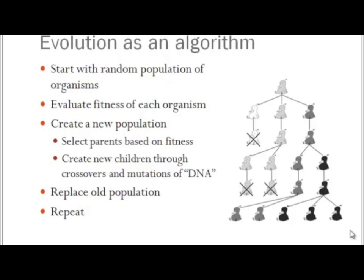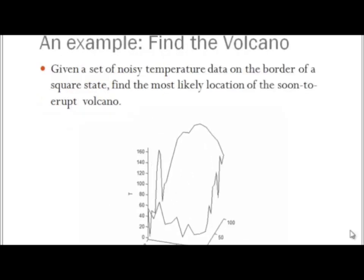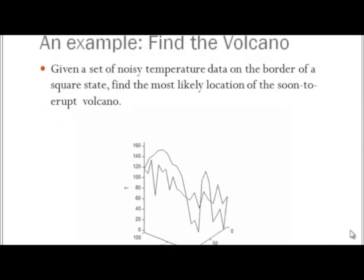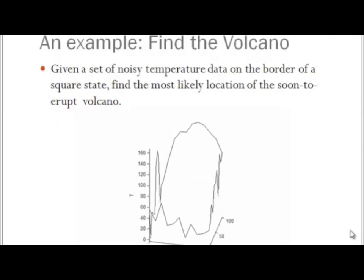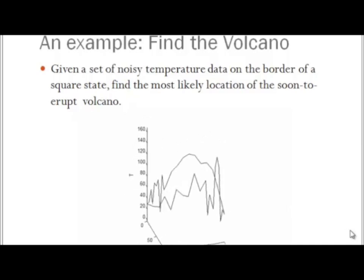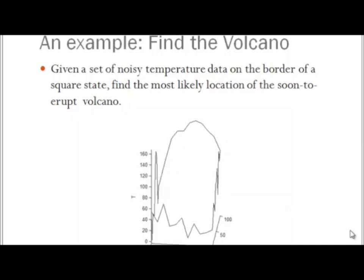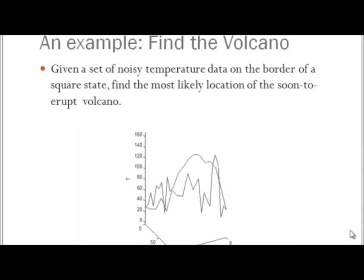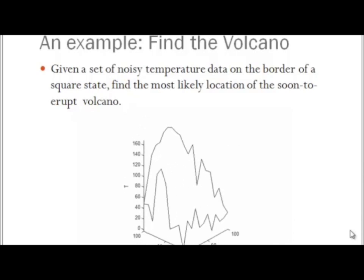In order to help explain how each of these steps work, let's consider an example problem. Here is a problem we've used several times in our computational statistics course this semester. Find the volcano. We are given a set of noisy temperature data on the border of a square state. For some reason, our state is so completely broke, we can't take our own temperature measurements. We have to use temperature measurements from our neighboring states. It's a contrived scenario. And we have this data. The data suggests that a volcano is about to erupt. We see this fantastically high temperature, and we want to find where that volcano is, so we can evacuate the people nearby.